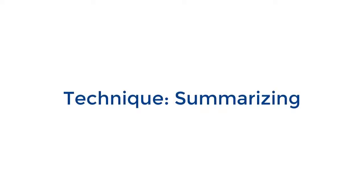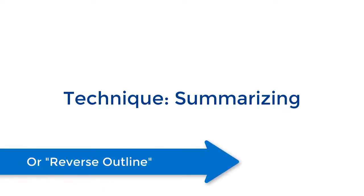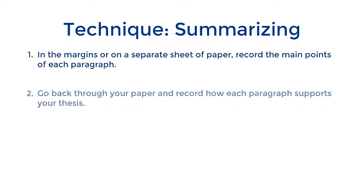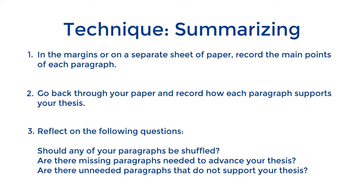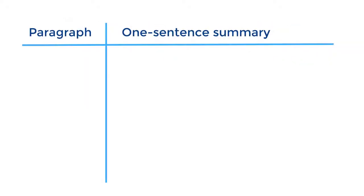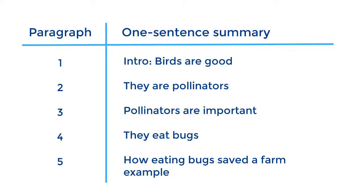Another technique is using summarizing techniques for your draft. This is sometimes called a reverse outline, because you create it after having written your paper. This slide shows one approach to this, focused on articulating the main point of a paragraph and its purpose or function, as well as any questions you might have about it. Another approach is to create a one-sentence summary of each paragraph, either in the margins or on a separate sheet of paper. This can allow you to see if any paragraph should be reshuffled, and it can help you see if you have any missing paragraphs or unneeded paragraphs that don't support your thesis.